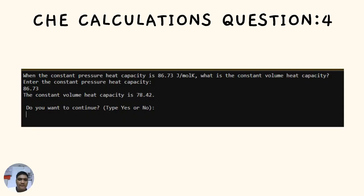The last question for Chemical Engineering Calculations: When the constant pressure heat capacity is 86.73 joules per mole times K, what is the constant volume heat capacity? Enter the constant pressure heat capacity as 86.73, and it will give the constant volume heat capacity of 78.42.